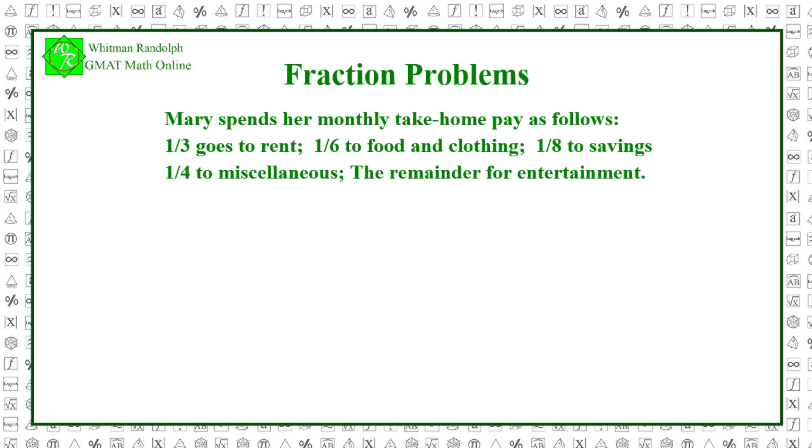Mary spends her monthly take-home pay as follows. One-third goes to rent. One-sixth to food and clothing. One-eighth to savings. One-fourth to miscellaneous expenses. The remainder she uses for entertainment. If her non-entertainment expenses are $2,100, what does she spend on entertainment? And here are some possible answers.